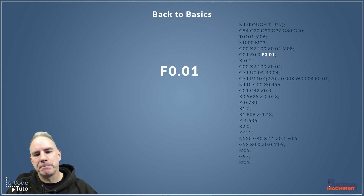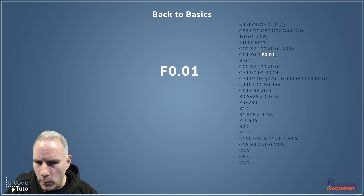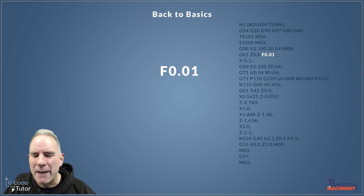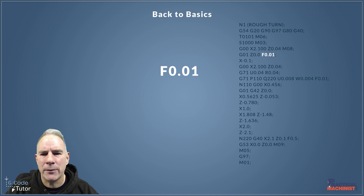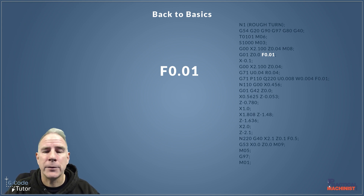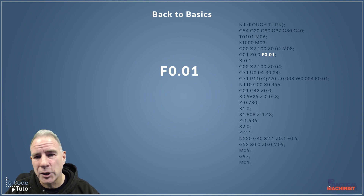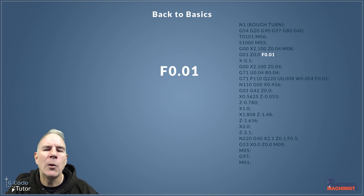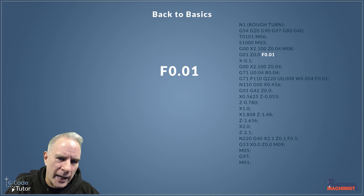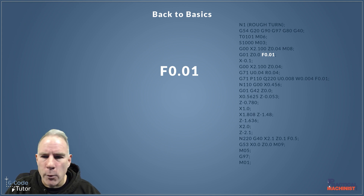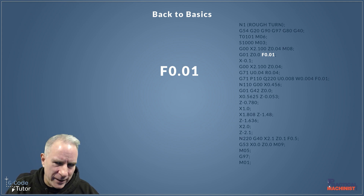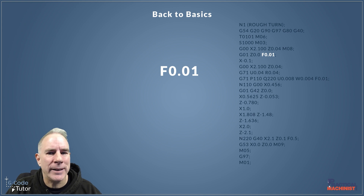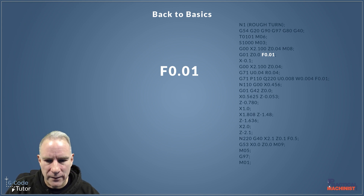Now we have feed rate. After a G01 command, we have to issue a feed rate so the machine knows how fast to move. It depends whether we are working in millimeters per rev of the spindle — as we tend to do on a lathe — or whether it's meters per minute or inches per minute as we would on a milling machine. We don't need to keep issuing that feed rate; it will stay active until we change it.